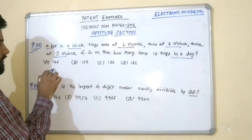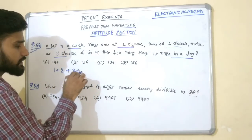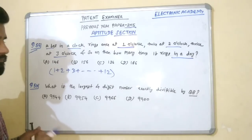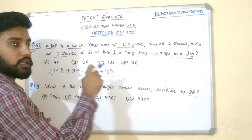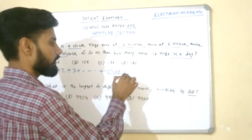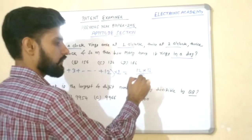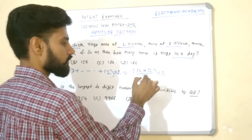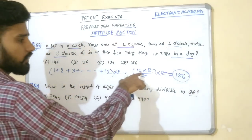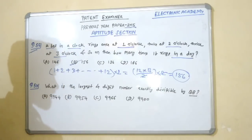For one cycle from 1 to 12, the total is 1 + 2 + 3 + ... + 12, which is the sum of first 12 natural numbers: n × (n + 1) / 2 = 12 × 13 / 2 = 78. Since this repeats twice in a day, the total is 78 × 2 = 156. So option B, 156, is the correct answer.